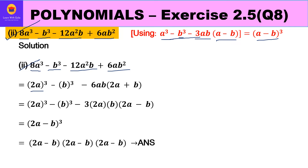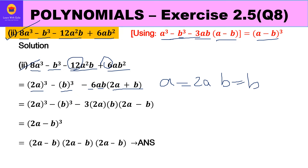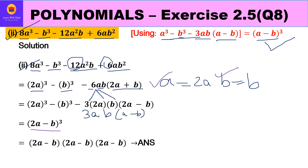Now 8a³ can be written as (2a)³ and b³ as b whole cube. For 12 and 6, the common factor is 6; we take out a and b as well, leaving (2a + b) inside the bracket. So our a is 2a and b is b. Since 6ab = 3 × a × b with (a-b) in the bracket, the condition is satisfied. Therefore the factors are (2a - b)³, that is (2a-b)(2a-b)(2a-b).